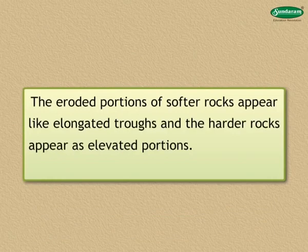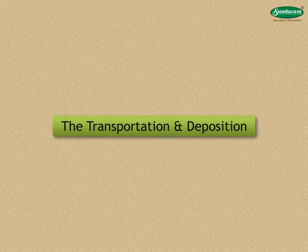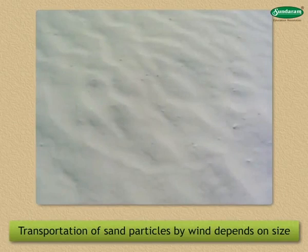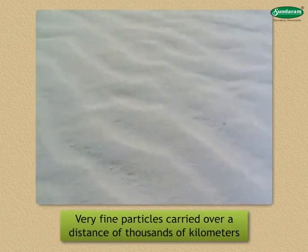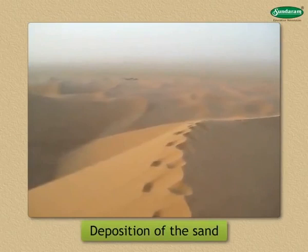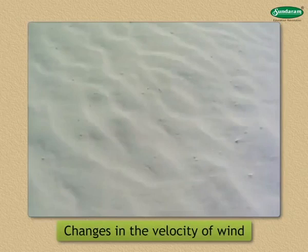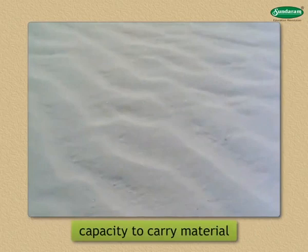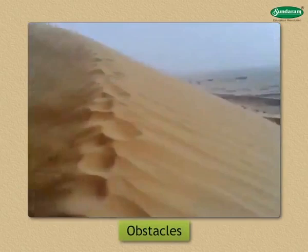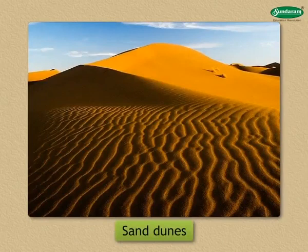Now let us study about the transportation and deposition carried by wind. A large amount of sand is carried away by the wind. The transportation of sand particles by wind depends upon their size. Very fine particles are carried over a distance of thousands of kilometers. Comparatively, larger and heavier particles are moved to shorter distances. The deposition of sand carried by wind gives rise to a variety of landforms. First, Sand Dunes: the changes in the velocity of wind leads to variations in its capacity to carry material. The velocity of wind also gets reduced due to obstacles. As a result, the sand gets deposited, leading to the formation of sand hills called sand dunes.